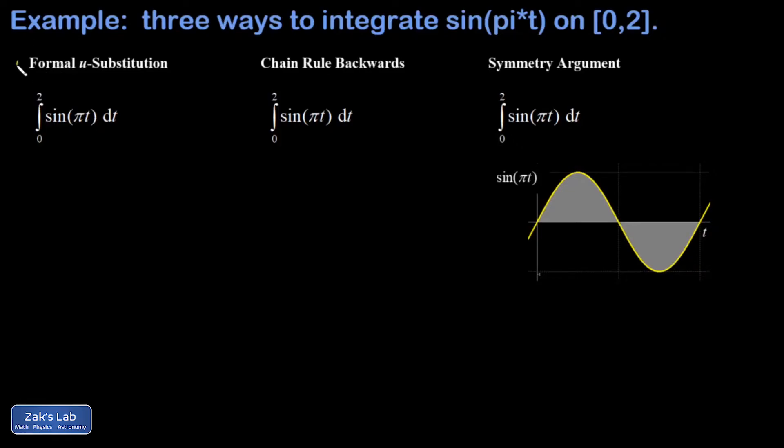I'm going to give that one star because it's a pretty good solution. Then we have the chain rule backwards solution, which I'll give two stars because I think it's even better. And finally we have the symmetry argument, and from an applied mathematics perspective, this is the best solution because it allows you to skip all the work.